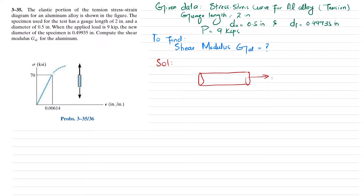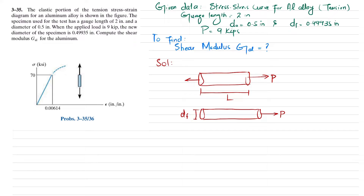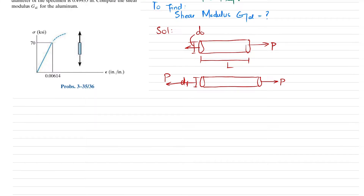When you apply a tensile load P on a rod of original length L, its length will increase by some amount, its diameter will reduce to d_f. This reduction in diameter is given. To find the shear modulus of aluminum, we use the relationship G = E / [2(1 + ν)], which I have explained in my theory lectures.